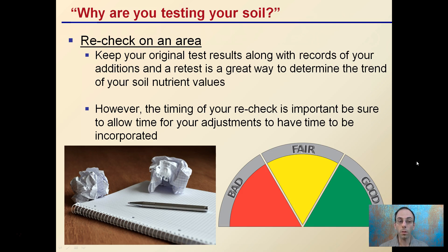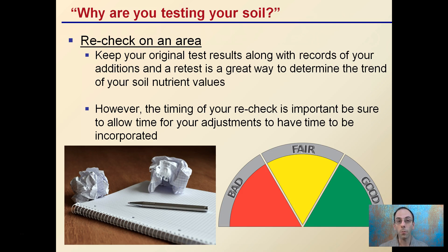Be sure to allow time for adjustments to be incorporated. For example, if you notice your pH is low and you add lime, don't go out the next day and test your soil. It takes a while for that lime to activate and adjust that pH range. So if you retest the day after or a week after, that might give you a false reading. For pH changes especially, if you're using lime, you want to allow time for it to sufficiently break down, then retest, and you'll get a more accurate comparison.